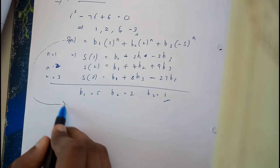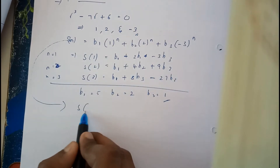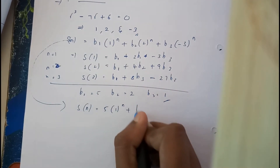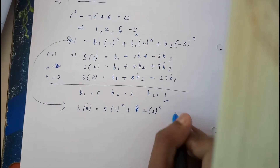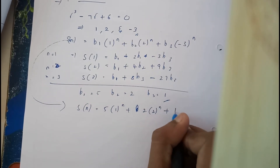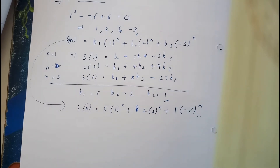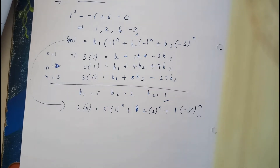Hence the final homogeneous equation is: s(n) = 5·(1)^n + 2·(2)^n + 1·(−3)^n. I hope everyone has a clear idea of how homogeneous solutions to recurrence relations are formed.